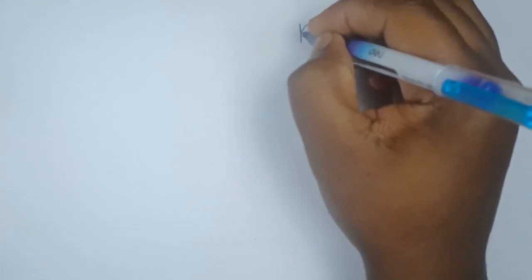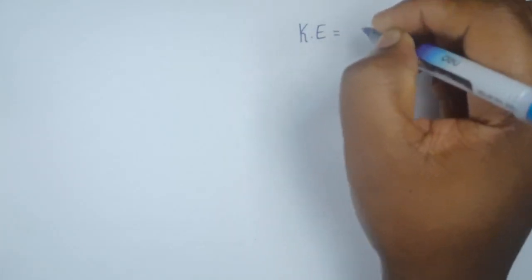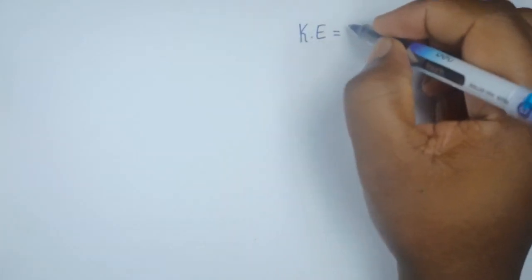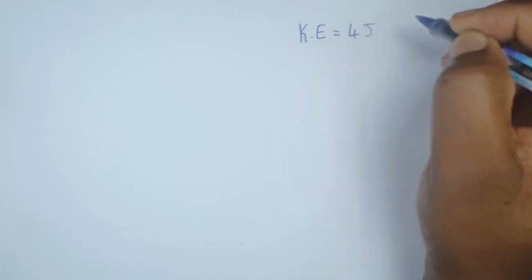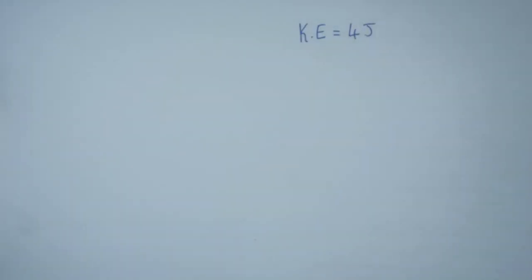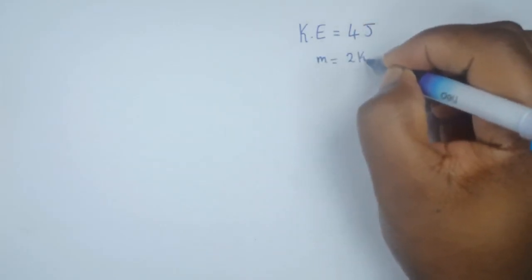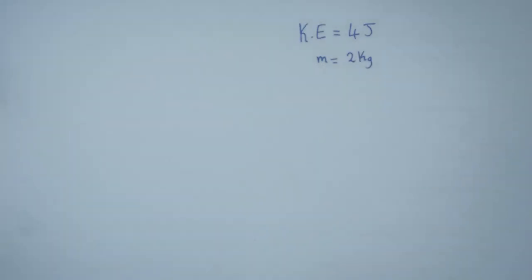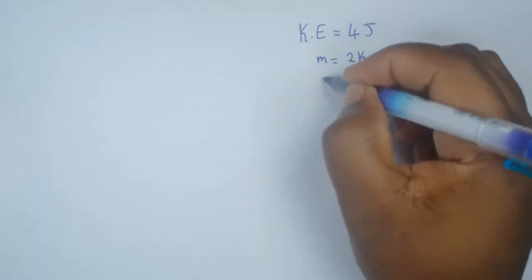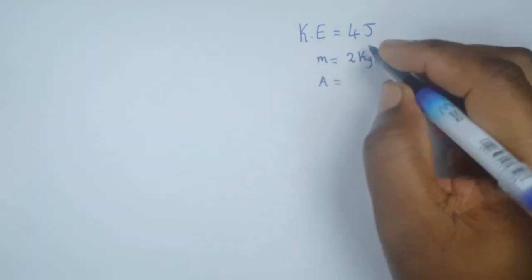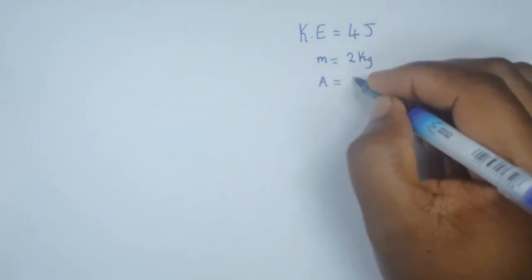For our question, we have been given the kinetic energy, so kinetic energy in this case we've been given four joules. We have also been given, since the question says it passes through the mean position, the mass, which is two kilograms. Then we've also been given the amplitude A, which is one meter.